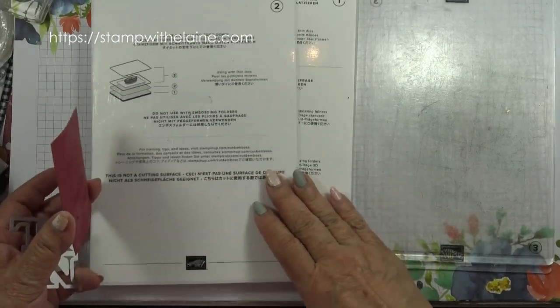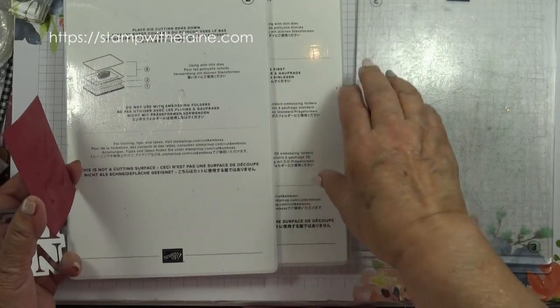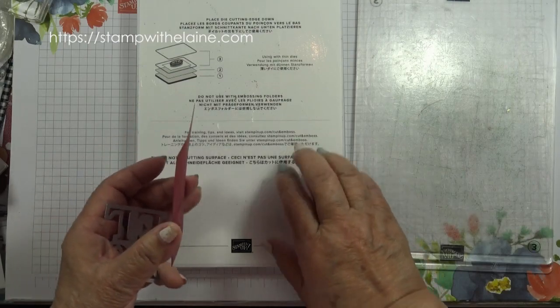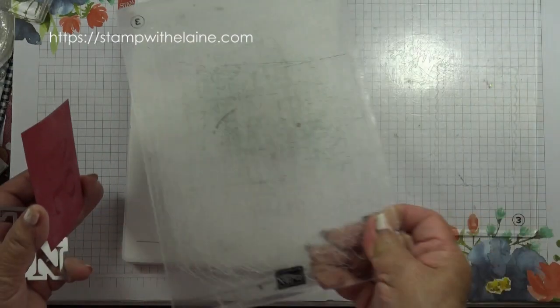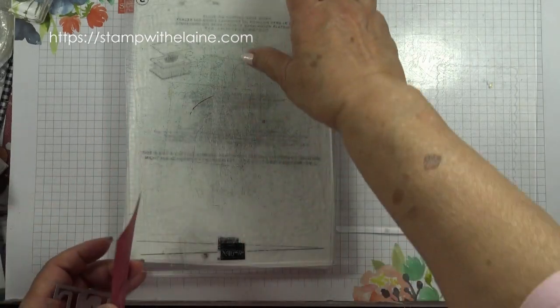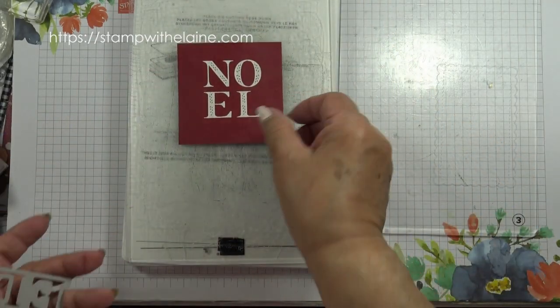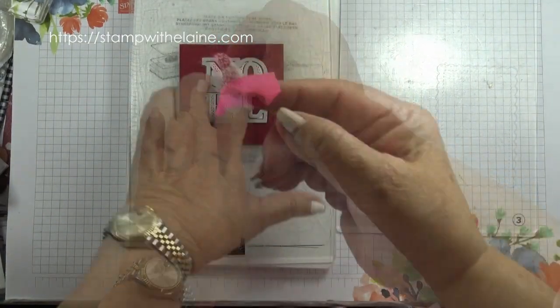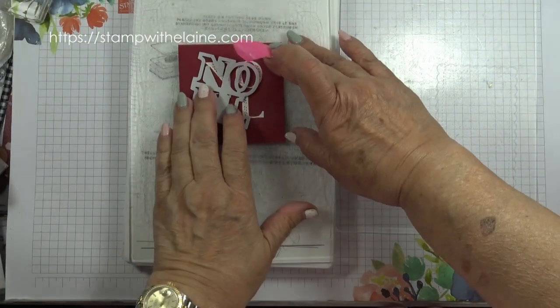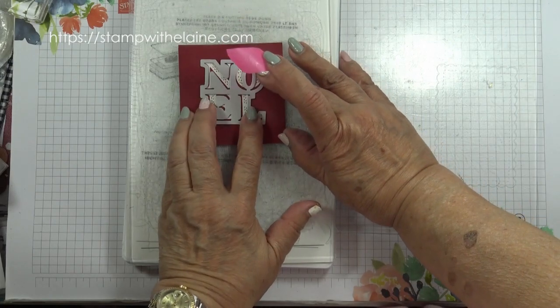Die cut the letters out. And to make your sandwich, you need platform one, the thin die adapter platform two, one of the platform threes as a base plate, your cardstock with a die cutting edge face down. Secure the die over the letters so that there are no gaps.